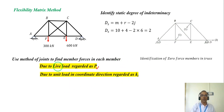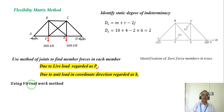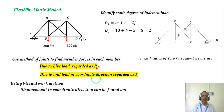It is good to know the identification of zero force members, because doing the method of joints for every joint takes time, so it is easy to identify zero force members quickly. Using the virtual work method, we can find the displacement in coordinate one direction and coordinate two direction — the internal work done must equal the external work done.